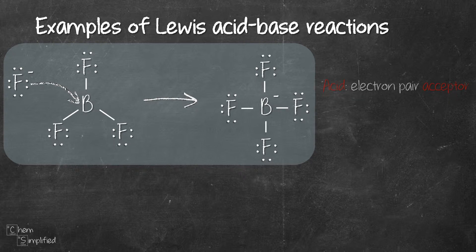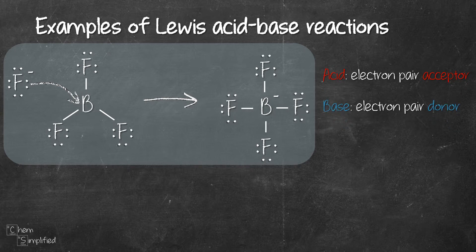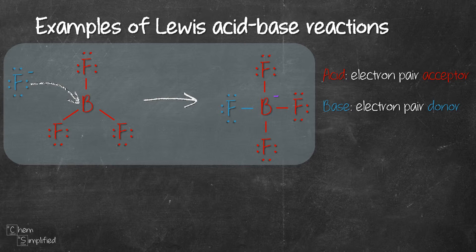Recall that a Lewis acid is an electron pair acceptor while a base is an electron pair donor. Notice from the diagram, the electrons are moving from F- to B. Since fluoride donated its electron pair to BF3, that makes it a Lewis base. Therefore, BF3 is the Lewis acid in this example and fluoride ion is the Lewis base.